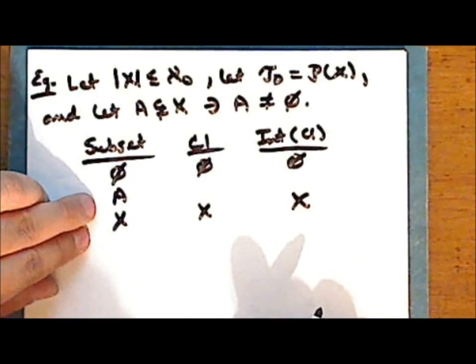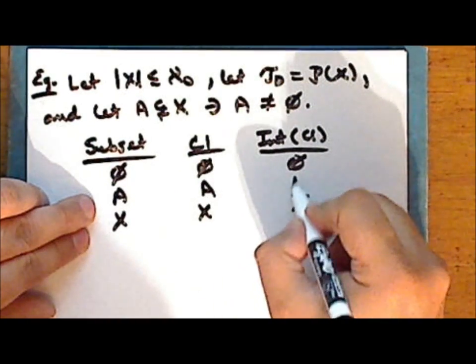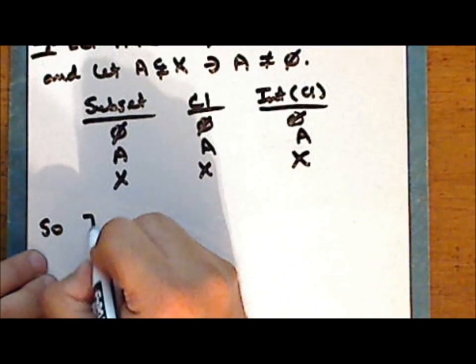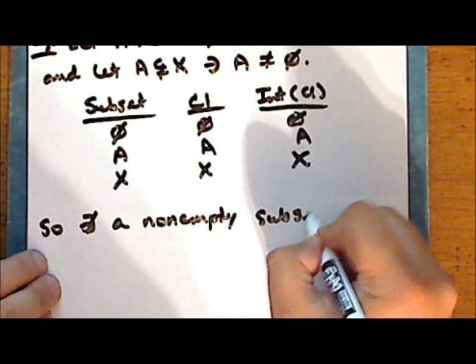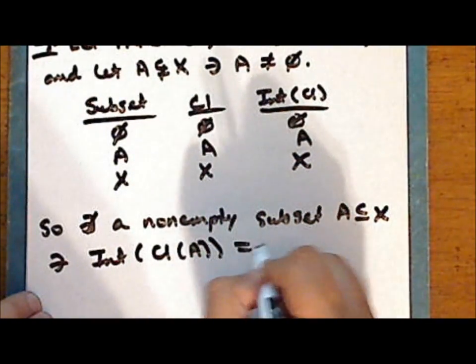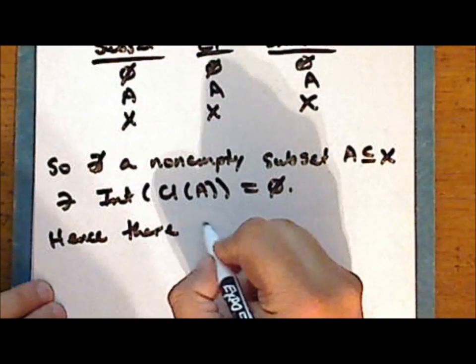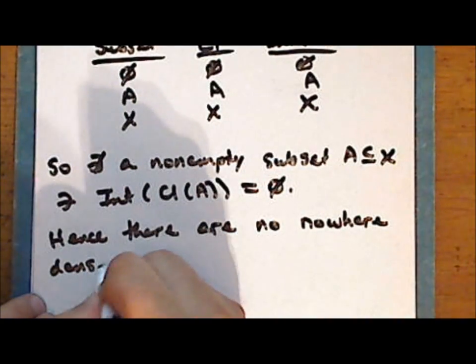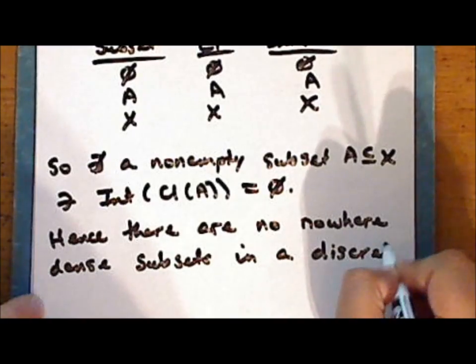Now in the discrete topology, every set is both open and closed, so the set A is its own closure, and the interior of the set A is also the set A. And so there does not exist a non-empty subset A of the space X such that the interior of the closure of A is the empty set. Hence there are no nowhere-dense subsets in a discrete topological space.